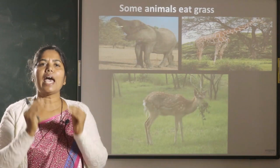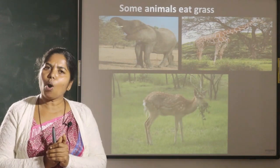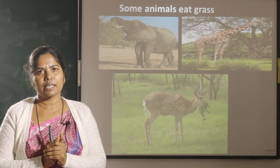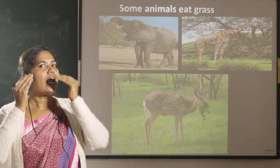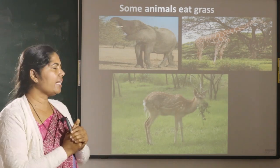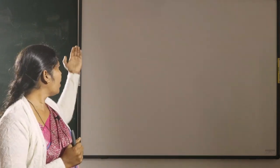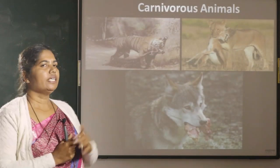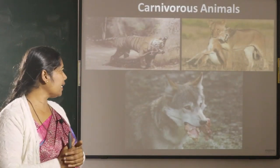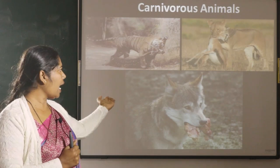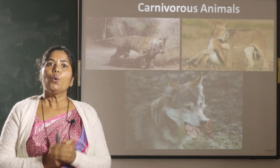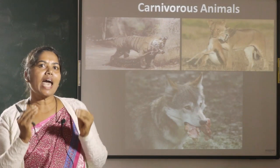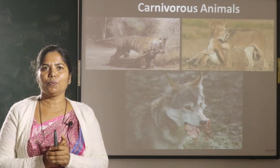Some of the wild animals are called carnivorous animals. They kill other animals and they eat. For example, tiger, lion and wolf. We can see some of the wild animals in the zoo.